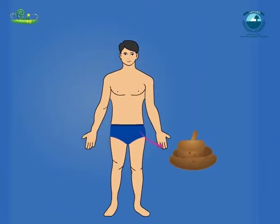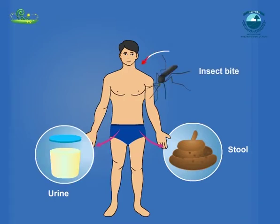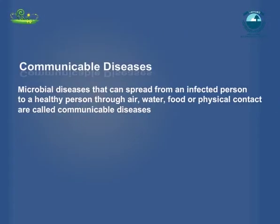Pathogens enter our body through the air we breathe, the water we drink, or the food we eat. They can also get transmitted by direct contact with an infected person. Microbial diseases that can be spread from an infected person to a healthy person through air, water, food or physical contact are called communicable diseases.